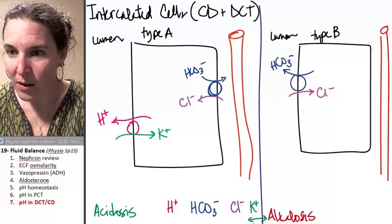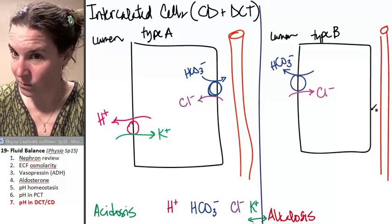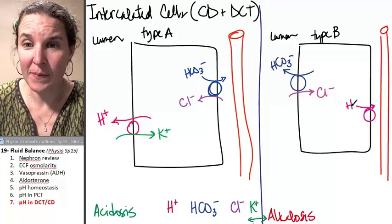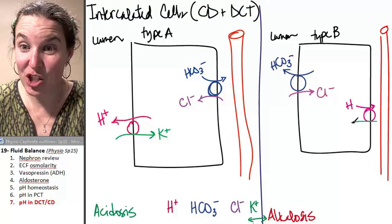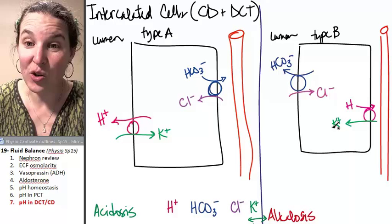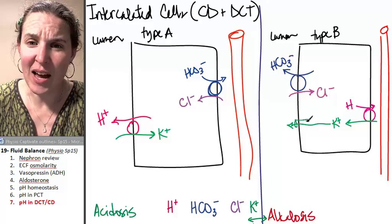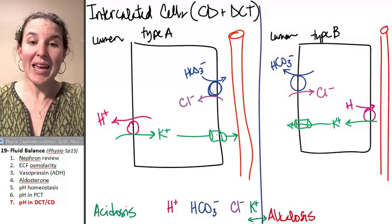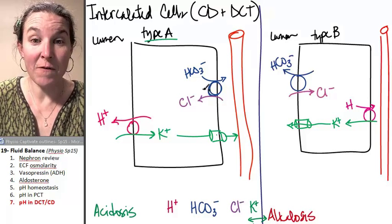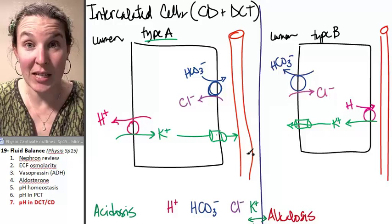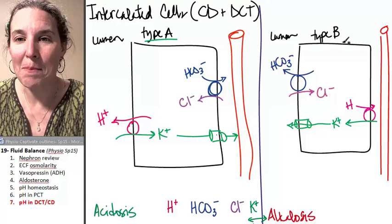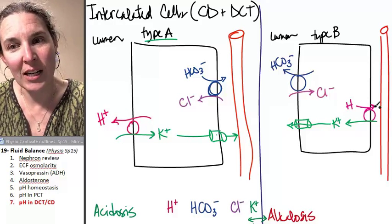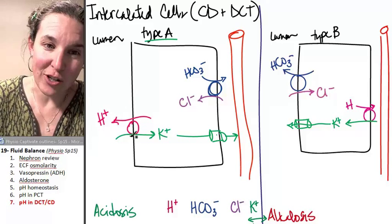If we are alkalotic, we want to reabsorb the hydrogen ions. But look what's going to happen in exchange. We're going to secrete potassium. And in fact, there are potassium channels that are going to allow us to finish the job. So if your type A's are functioning, you're actually going to increase potassium concentrations in your blood. If your type B's are functioning, you're going to actually decrease potassium concentrations. However, you're going to increase hydrogen ion. You're going to decrease hydrogen ion.